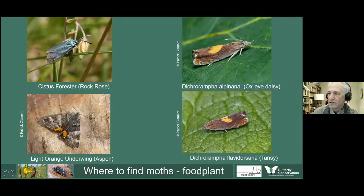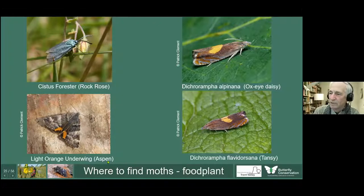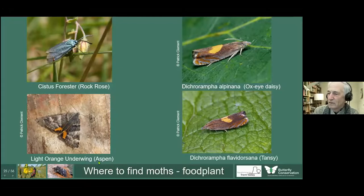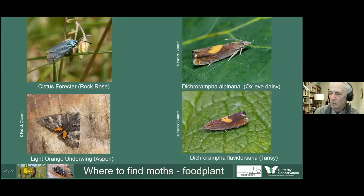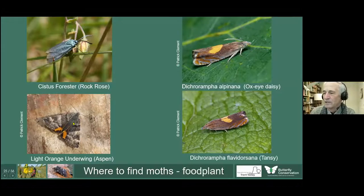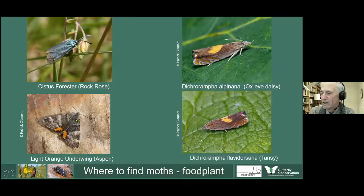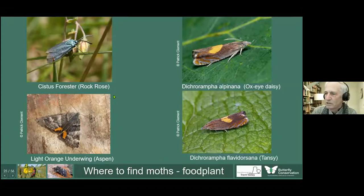Similarly, the Orange Underwing moth commonly flies around birch trees, but there's another species — the Light Orange Underwing — which feeds on aspen. If you're concerned about which species you've seen, you need to check whether you've got aspen growing nearby. Aspen isn't particularly common in this part of the world, but it's always worth checking. On Cannock Chase, if you see an orange underwing flying around birch trees in April, it will be the Orange Underwing because there's likely no aspen there.